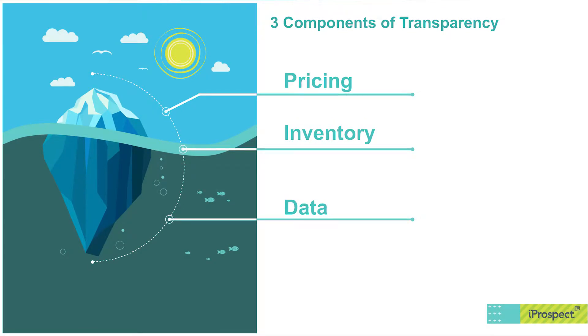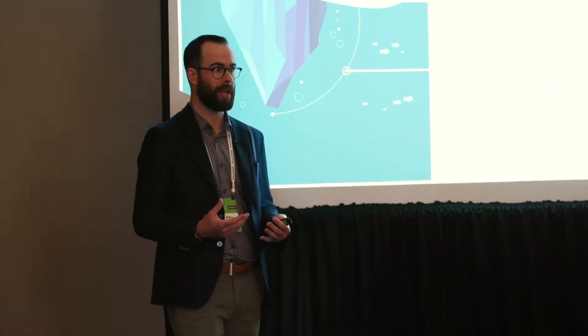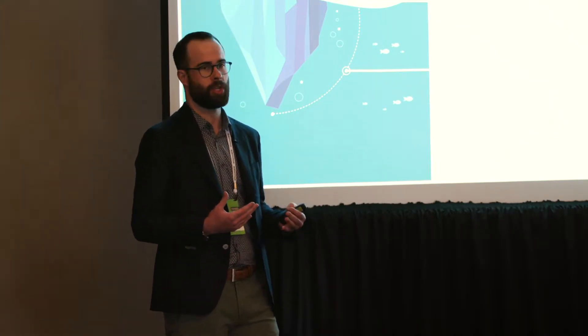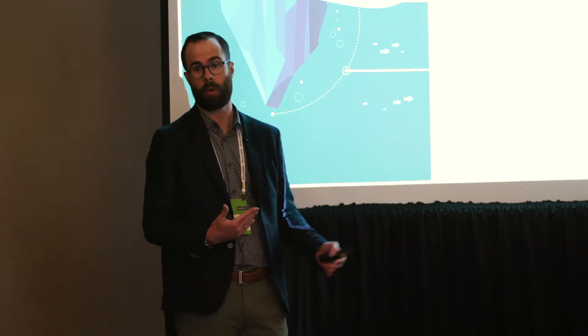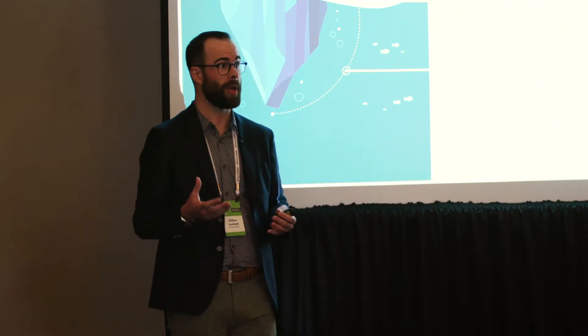First and foremost: pricing. Pricing has been the biggest watershed moment for programmatic. Damning reports like the ANA's K2 report on transparency led advertisers to understand for the first time what the margins on display media are and where those dollars go. This led to wholesale change in pricing models — we now work on transparent fixed fees so advertisers understand exactly where dollars are going in the supply chain. The second component is inventory: understanding exactly where your ads are running, getting domain and site-level transparency, and ensuring brand-safe, high-quality inventory.